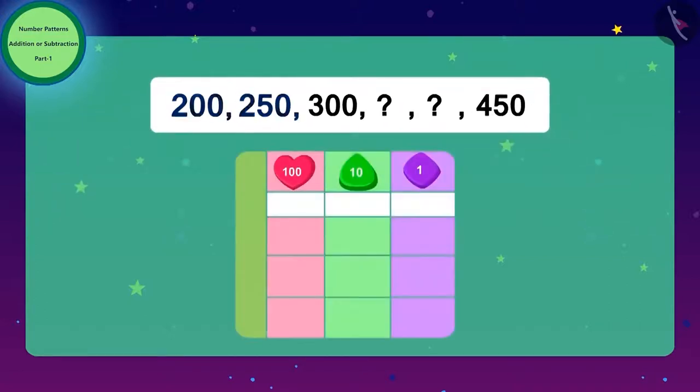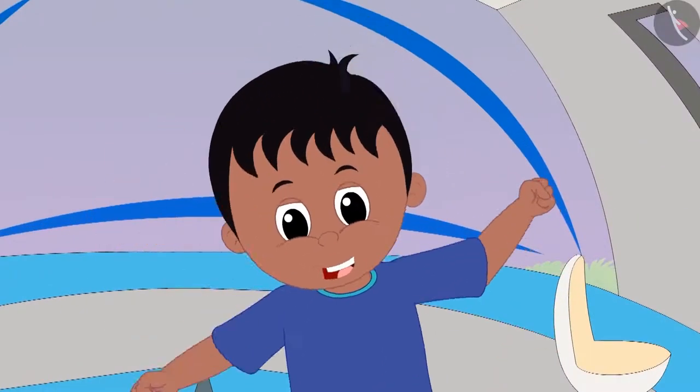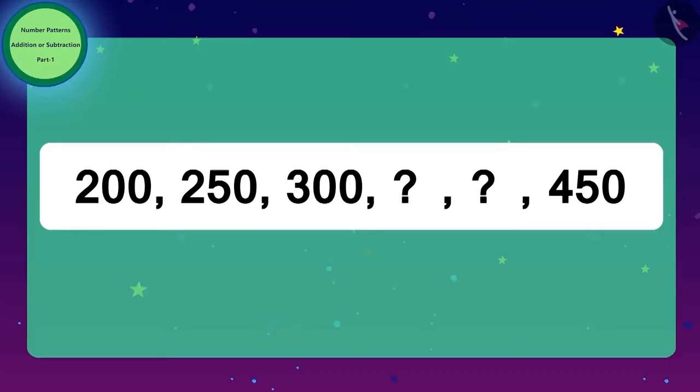Bablu told Raju that they should look at the numbers in order. So, what should Bablu and Raju do now? To find the difference between the first two numbers, they should subtract 200 from 250. What remains when 200 is subtracted from 250? Then they found the difference between 300 and 250. And again they got 50.